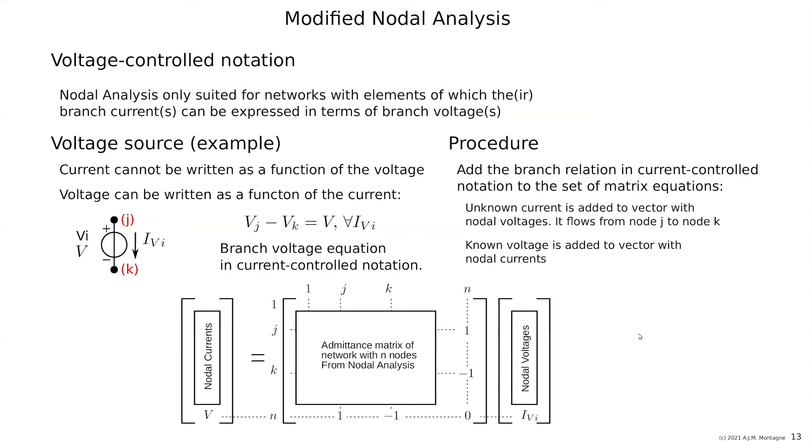That is basically modified nodal analysis. Here we have the branch voltage and here we have the unknown branch current. So instead of nodal voltages, we have a branch current. And instead of nodal currents here, we have a branch voltage. And the tableau analysis, if you ever did this or heard about it, has all the branch currents and all the nodal voltages of the elements available.